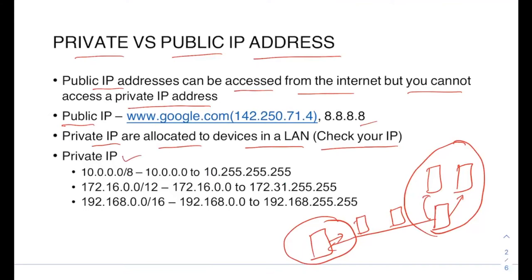Some popular examples of private IP address subnets: the first one is 10.0.0.0/8, meaning IP addresses from 10.0.0.0 to 10.255.255.255. If you see any IP address within that range, it is typically a private IP address. Another popular one is 172.16.0.0/12, and another one is 192.168.0.0/16. If you check your IP address, it should fall within one of these three private subnets.